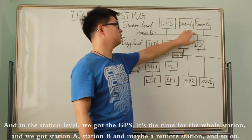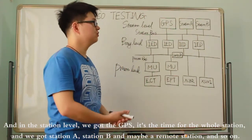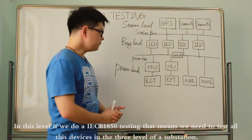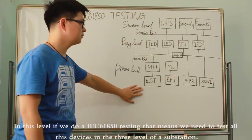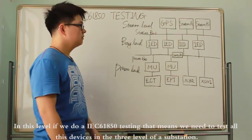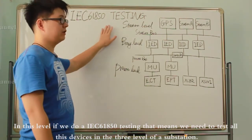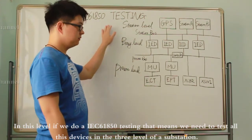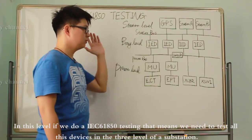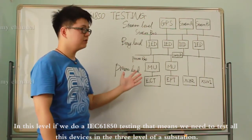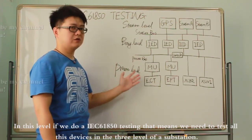And we have Station A, Station B, and maybe a remote station, and so on. If we do IEC 61850 testing, that means we need to test all these devices across the three levels of our substation.